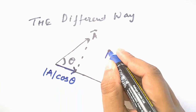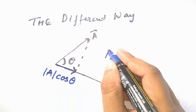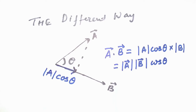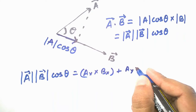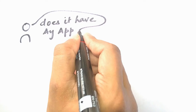This operation can also be done in a different way: we project one vector onto the other, and then multiply the projection of the first vector with the magnitude of the second vector, and we get the same scalar quantity as found in the first method.